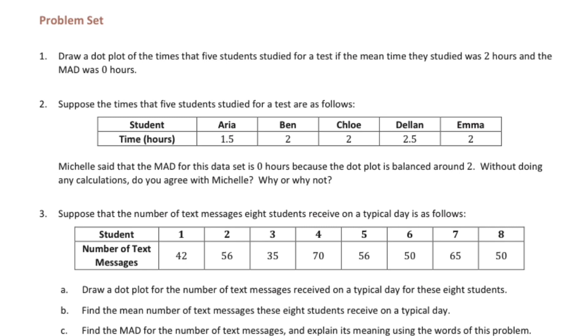Number 1. Draw a dot plot of the times that five students studied for a test if the mean time they studied was two hours and the MAD was zero hours. So we know that there are five students and the mean time is two hours and the MAD is zero hours. So we know that the average time was two hours, but what really stands out to me is that the MAD, meaning the mean absolute deviation, was zero. So that means that there's no variability whatsoever in this set of data points.